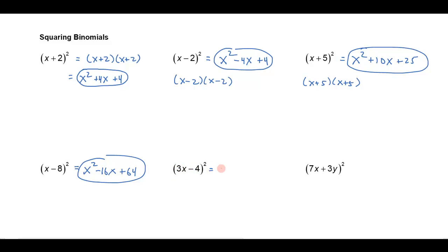So if I wanted to square this, I'd take 3x and square it, and that's going to be 9x squared, and you have to square the whole quantity. 3x times negative 4 is negative 12x, doubled is negative 24x, and then the negative 4 squared is going to be a plus 16.